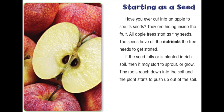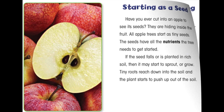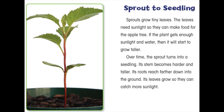If the seed falls or is planted in rich soil then it may start to sprout or grow. Tiny roots reach down into the soil and the plant starts to push up out of the soil. Sprouts grow tiny leaves. The leaves need sunlight so they can make food for the apple tree.